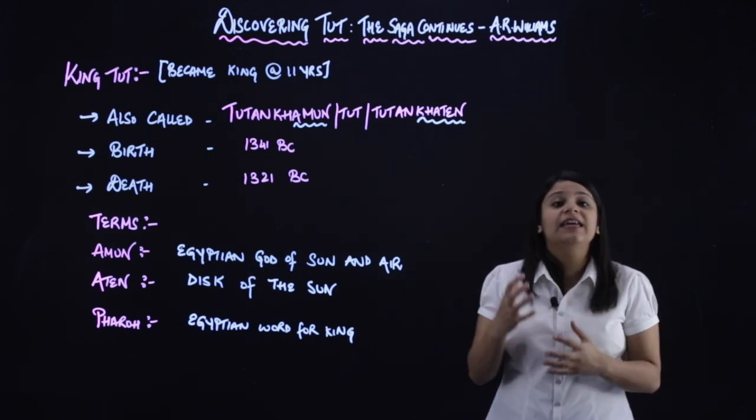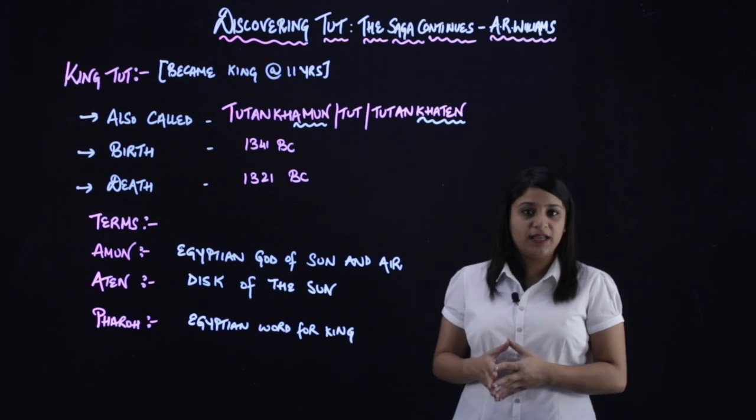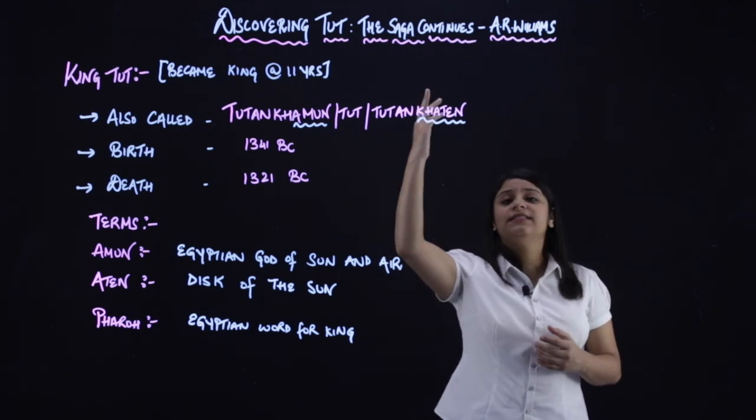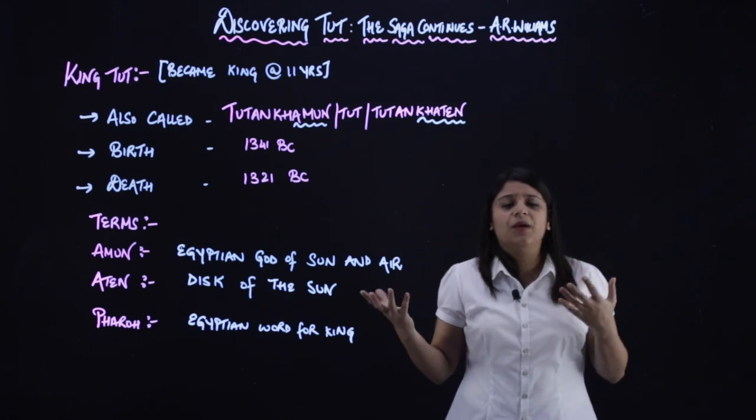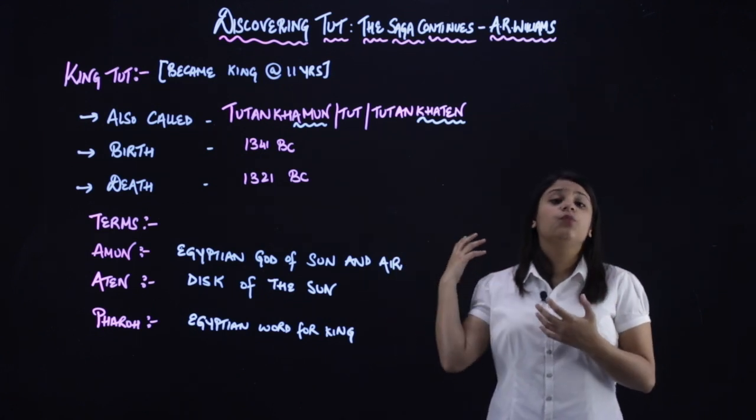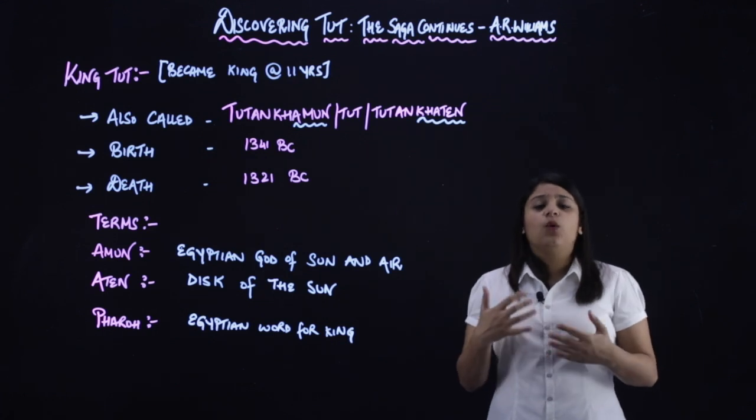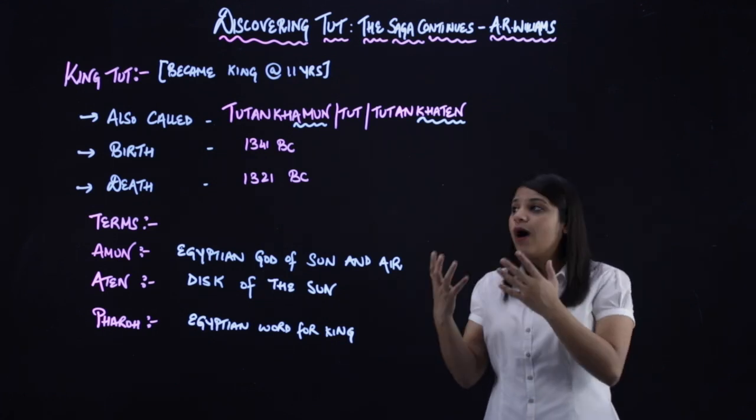So now let's see what his history is. That was about King Tut. Now let's see why is there so much mystery and as they say the saga continues. What does saga mean? Saga means a story that is very long and continues. So what is all the fuss about? Let's see now.